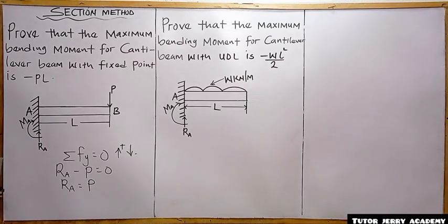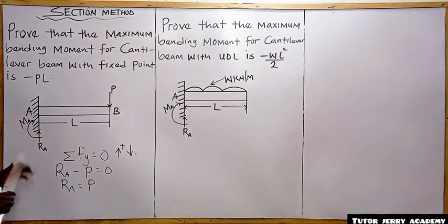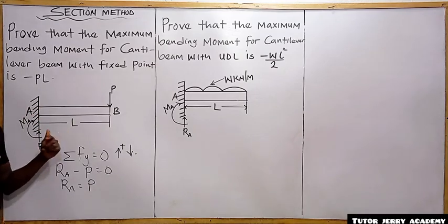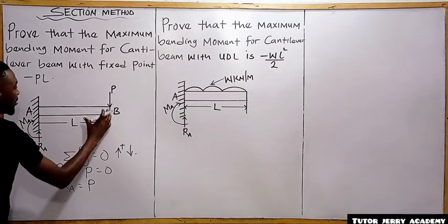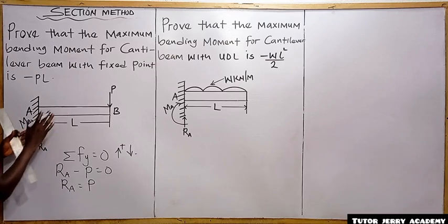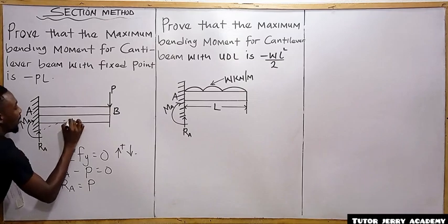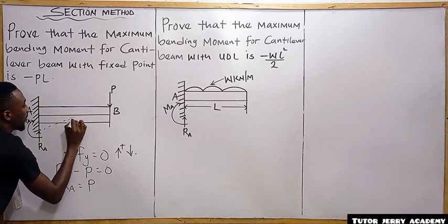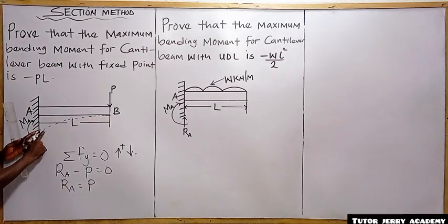The next step is to take the moment about point A. The moment will be maximum at point A because if you draw the bending moment diagram, the beam is going to bend in this manner, and we can see that maximum bending occurs at point A.